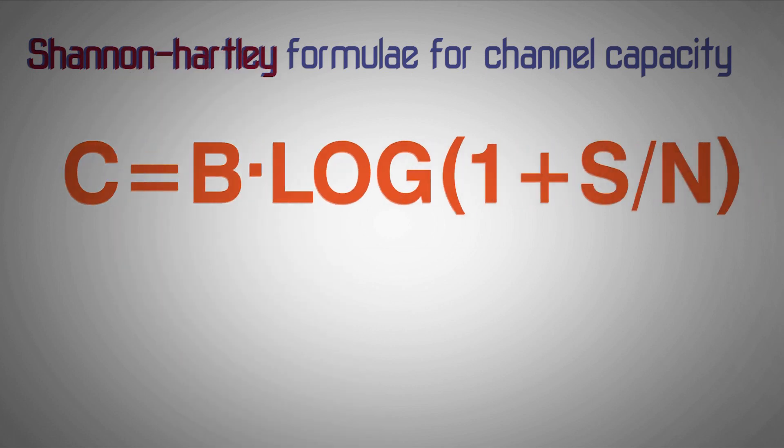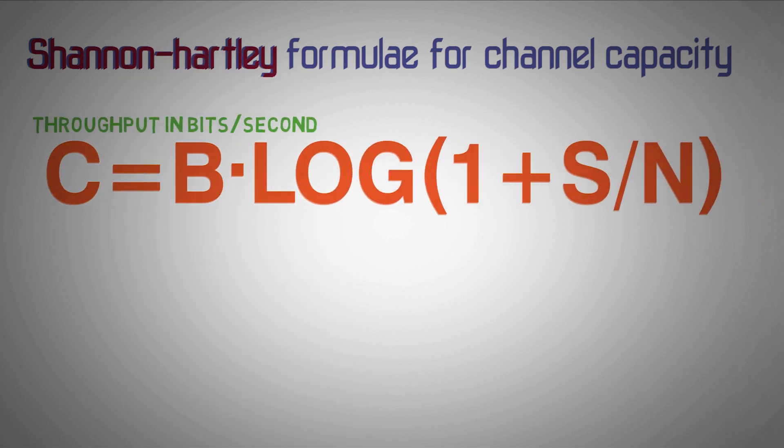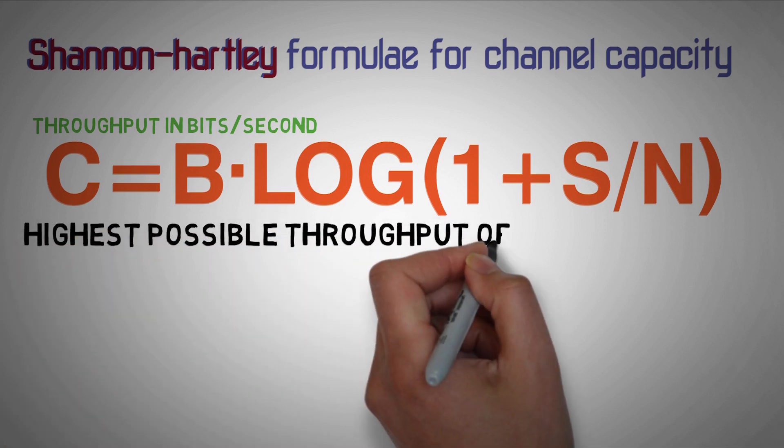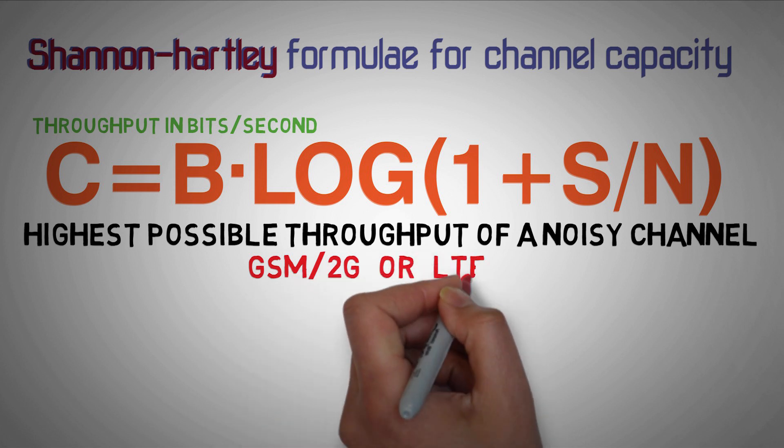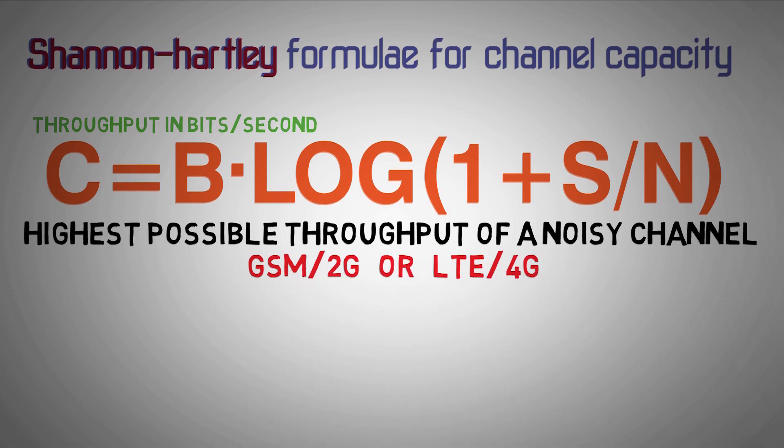If we go by the Shannon-Hartley formula for channel capacity, we see that the throughput in bits per second depends on the channel bandwidth and the signal quality or SNR. This formula indicates the highest possible throughput of a noisy channel and it applies to every communication channel, be it GSM 2G or LTE 4G. Although bandwidth is an indispensable factor in overall throughput, it all depends on how we use the SNR conditions for increasing throughput.